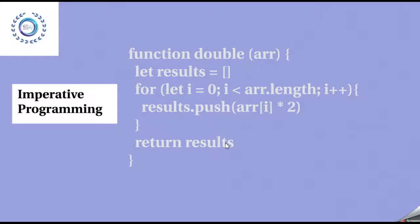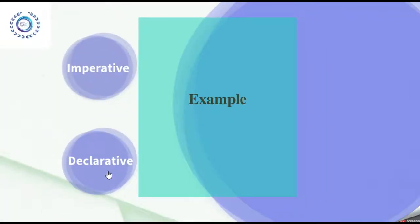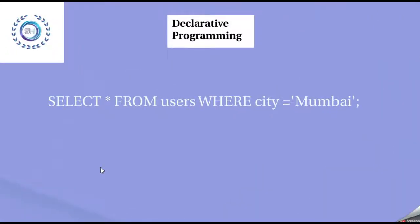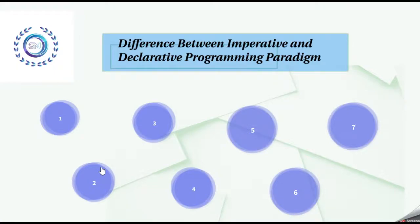Next, we will see the example of declarative programming. As we know, declarative programming paradigm is more concerned about what to do. Here, suppose we want information of all the users who live in Mumbai. Without instructing how to do it, a single SQL query performs the task of getting all the users' information who live in Mumbai. These are some of the main basic differences between imperative and declarative programming paradigms. Thank you.